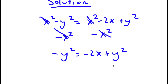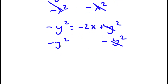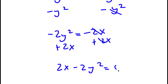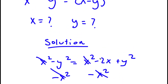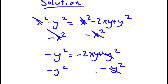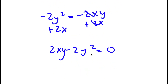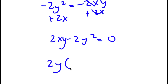Subtracting y squared from both sides, negative y squared minus y squared gives negative 2y squared, so negative 2y squared equals negative 2xy. Adding 2xy to both sides gives 2xy minus 2y squared equals 0. Factoring out 2y, I have 2y times x minus y equals 0.